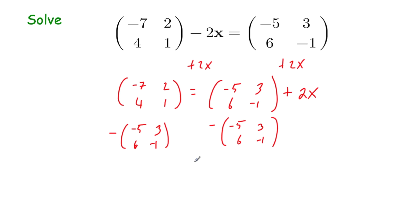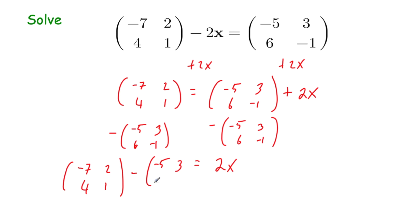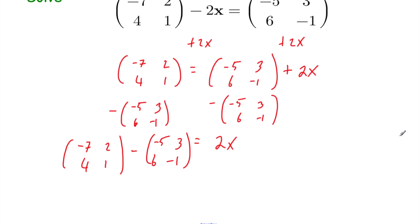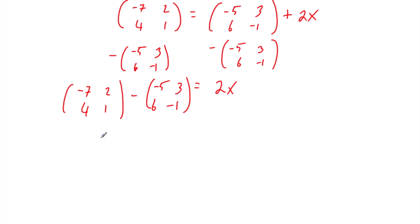On the right-hand side we took away the matrix to get rid of it, so we're just left with 2x. On the left-hand side we have [-7, 2, 4, 1] subtracting [-5, 3, 6, -1]. So: -7-(-5)=-2, 2-3=-1, 4-6=-2, and 1-(-1)=2. That equals 2x.